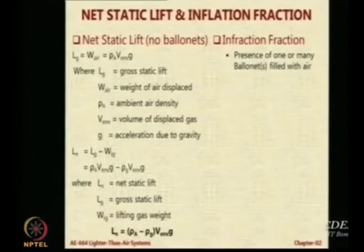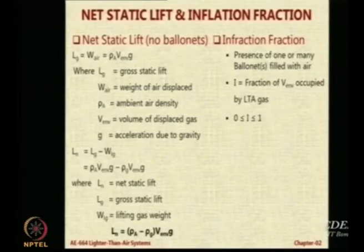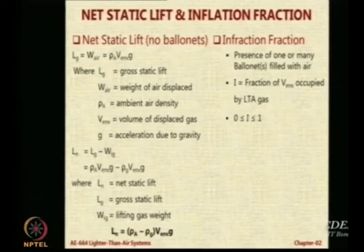So now, for the most typical situation for a manned airship, you will have one or many ballonets filled with air. If you define a term called the infraction fraction — it is the fraction of the envelope occupied by the LTA gas — then 1 minus i will be the fraction occupied by the ballonet. The value of i ranges from 0 to 1: it will be 1 if there are no ballonets or if you are at pressure height; it may be 0.8 or 0.7 otherwise.